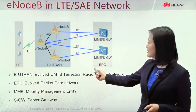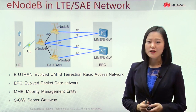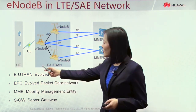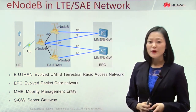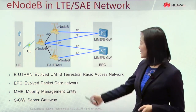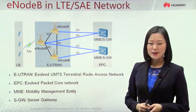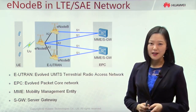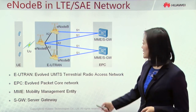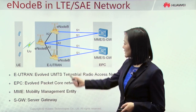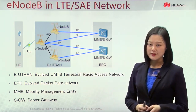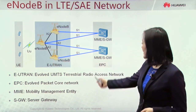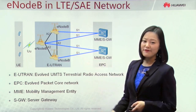This picture illustrates the network architecture of the fourth generation network. We can see it is comprised of three parts. First is UE, the user equipment. The second is E-UTRAN, the radio access network part. And the third is EPC, the core network part. The E0B is the only element inside the E-UTRAN network. It connects with UE by the UU interface and connects with EPC by the S1 interface.